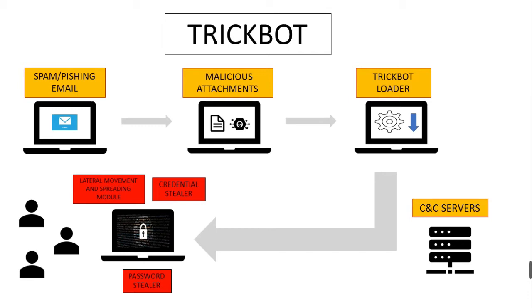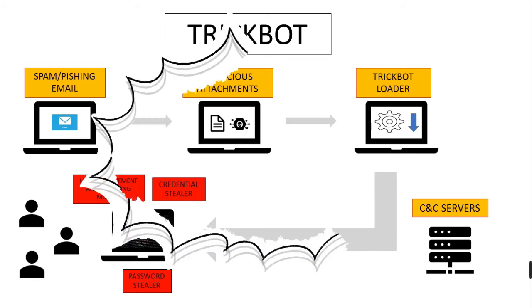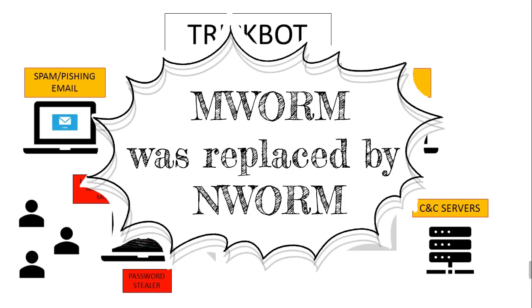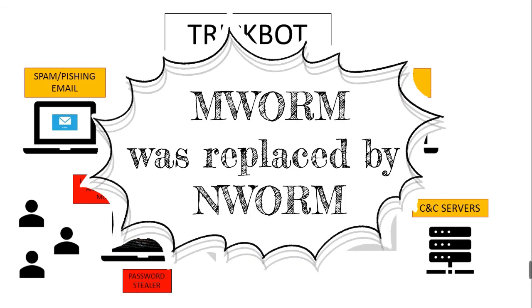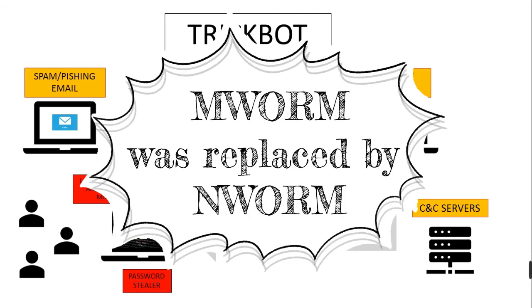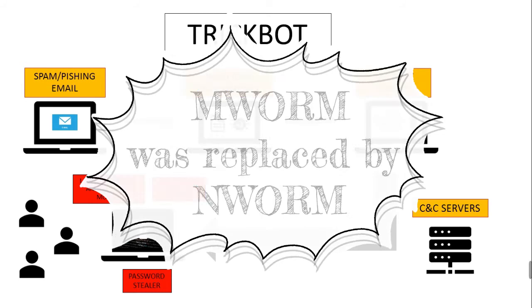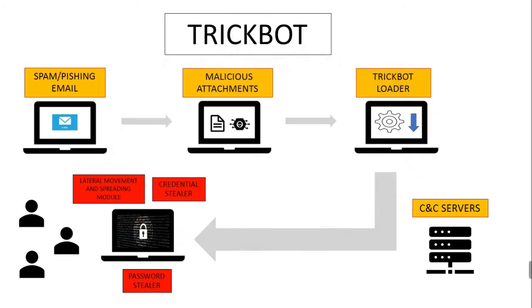TrickBot will attempt to update and reconfigure relevant modules, and attempt lateral movement through MWRM and share modules. MWRM, the module responsible for spreading a copy of itself, was replaced by a new module called NWRM. This new module alters TrickBot's HTTP traffic, allowing it to run from memory after infecting a domain controller.